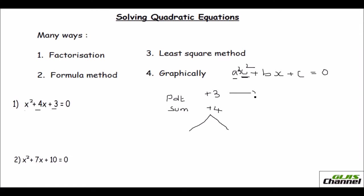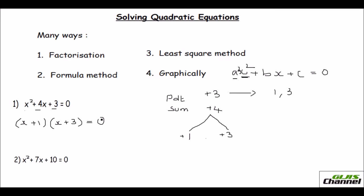See what numbers are possible. The factors of 3 are 1 and 3 — that's the only combination. When you multiply 1 and 3 you get 3, and when you add them you get plus 4. So the numbers are 1 and 3, both positive. You can straight away write the factors as x plus 1 and x plus 3.